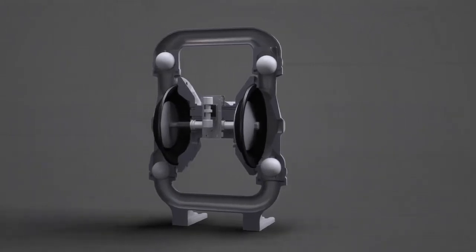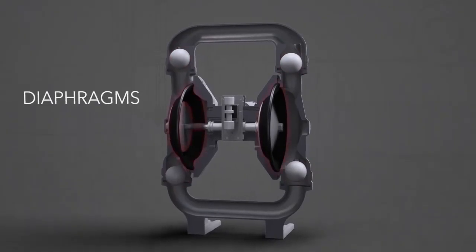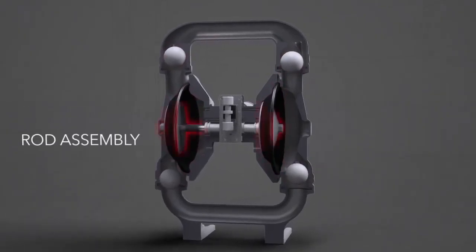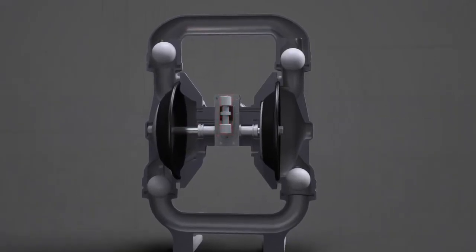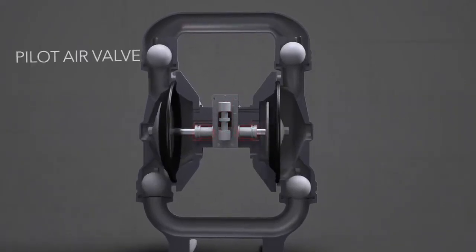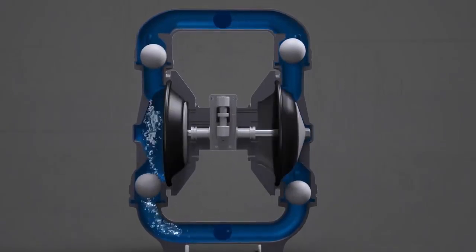Here's a look at what makes the A200 tick: check valves, diaphragms, the diaphragm rod assembly, the main air valve, and the pilot air valve. Now that you know the key components of the A200, we can discuss how it works.